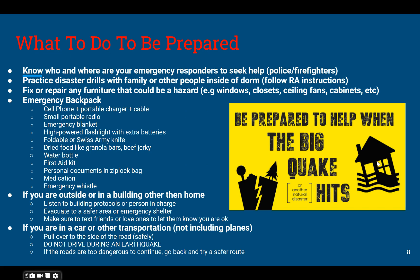What do you do to be prepared? There are some things you need to go over. You need to know who and where your emergency responders are to find help. You need to practice disaster drills with family, or if you are a college student, follow your residential hall's instructions. You should also fix, repair, or upgrade any furniture that could be a falling hazard, like windows, closets, and ceiling fans.